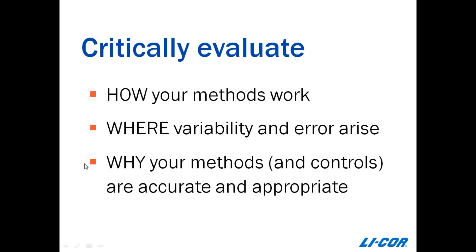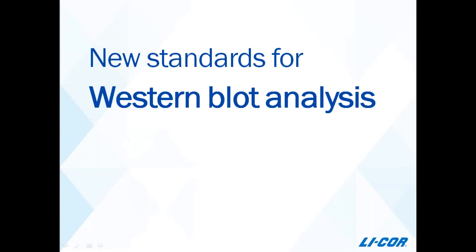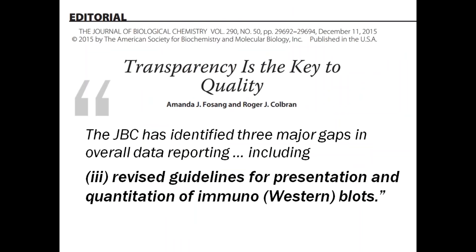In addition, journals are now implementing new reporting standards and asking you to fully report the methods and data analysis with enough detail for the reader to understand how you collected that data, how you analyzed it, and how you reached your conclusions. As Dr. David Drubin put it during the NIH workshop on data integrity and cell biology, scientists need to understand sources of variance in their system and communicate those sources. To do that, you should critically evaluate how your methods work and where variability and error are introduced, and be prepared to explain why your methods and your controls are accurate and appropriate for your experiment.